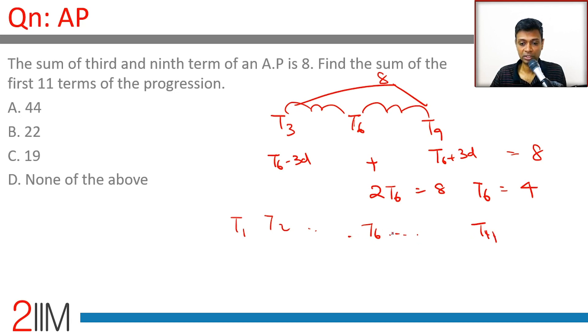T5 plus T7—this is T6 plus D, T6 minus D—these two will add up to 2T6. The next two will add up to 2T6. This and this will add up to 2T6. So the sum of 11 terms is just 11 times the sixth term.